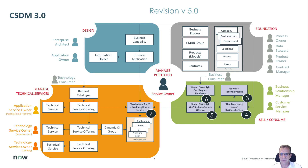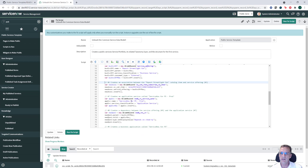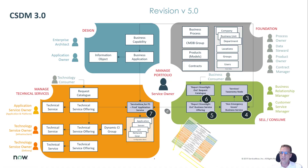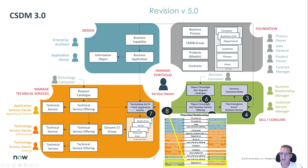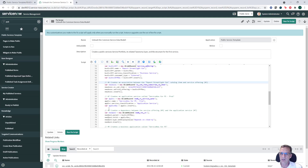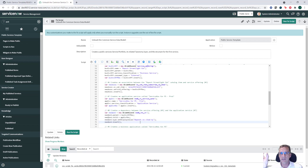Step 7 creates an application service — the technology stack that supports the service we're delivering. 'ServiceNow for PSProd' is the application service that supports 'report a streetlight out' from a technology perspective. Step 8 creates a relationship between the application service and what we're delivering to the business — a 'depends on' and 'used by' relationship, meaning the business service depends on the application service.